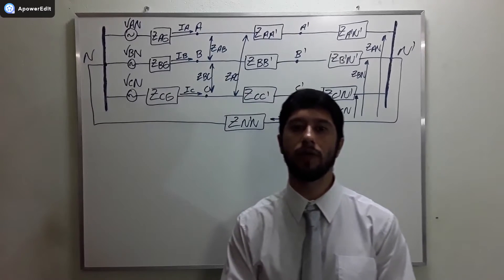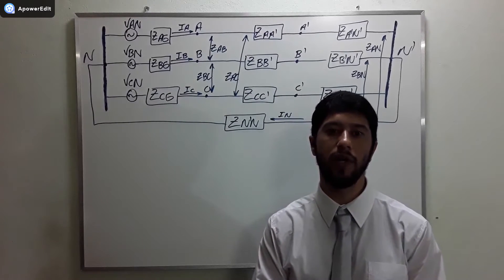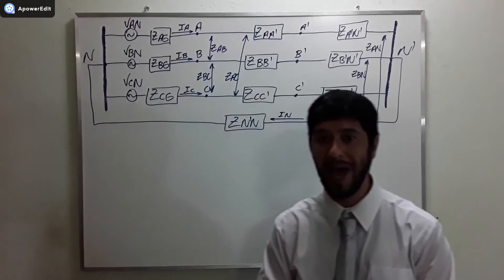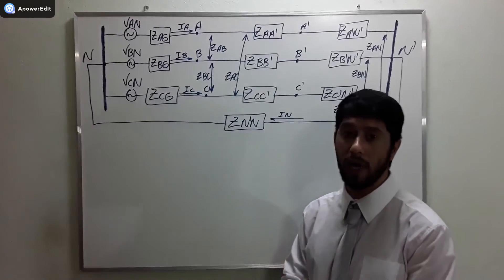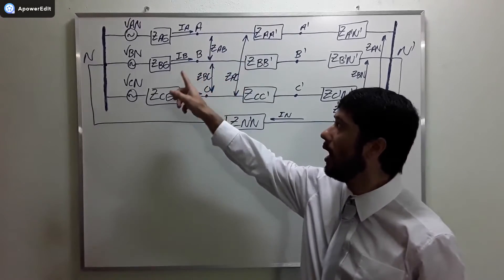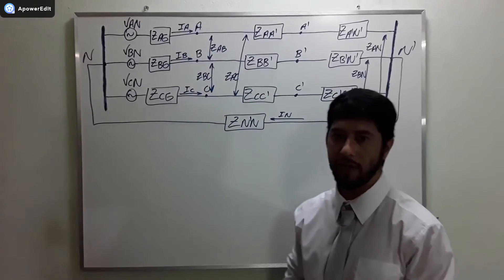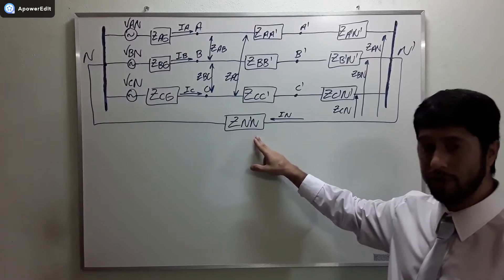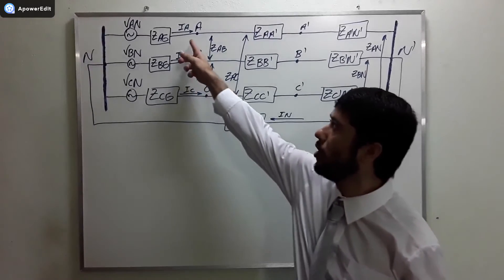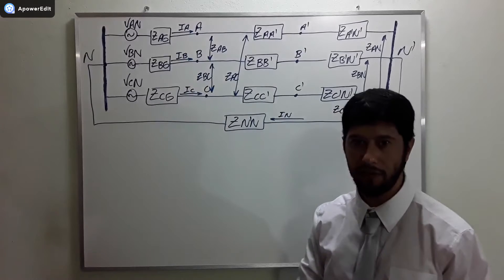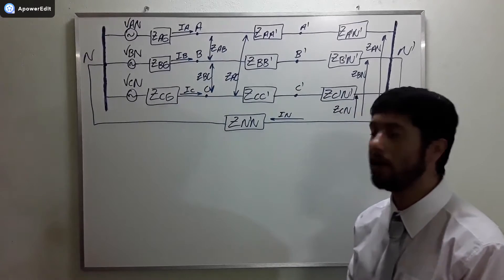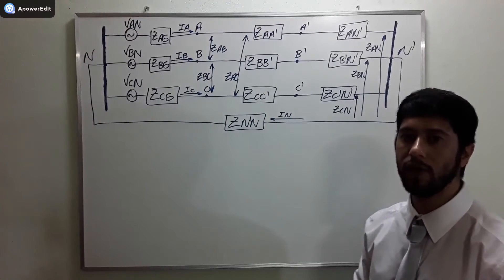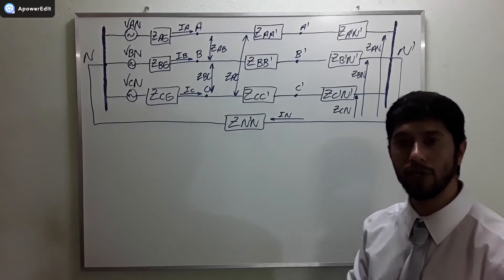Hello my friends and business partners from around the world, welcome to my channel. In this video I will speak about Kron's reduction applied to electrical power systems. Our objective is to calculate the line currents Ia, Ib, and Ic. When there is a ground system or a neutral wire, it is going to influence the value of those currents, so we need to discount that influence using Kron's reduction.